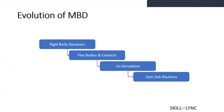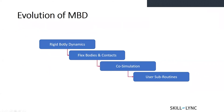Now looking at the evolution of multibody dynamics over the years: traditionally, MBD only dealt with rigid body dynamics, which meant results were not very accurate. In cases involving large deformations and displacements, rigid body dynamics couldn't handle that. The main limitation was that rigid body dynamics also couldn't capture stress and strain effects on parts, which limited the usage of MBD a few years ago.